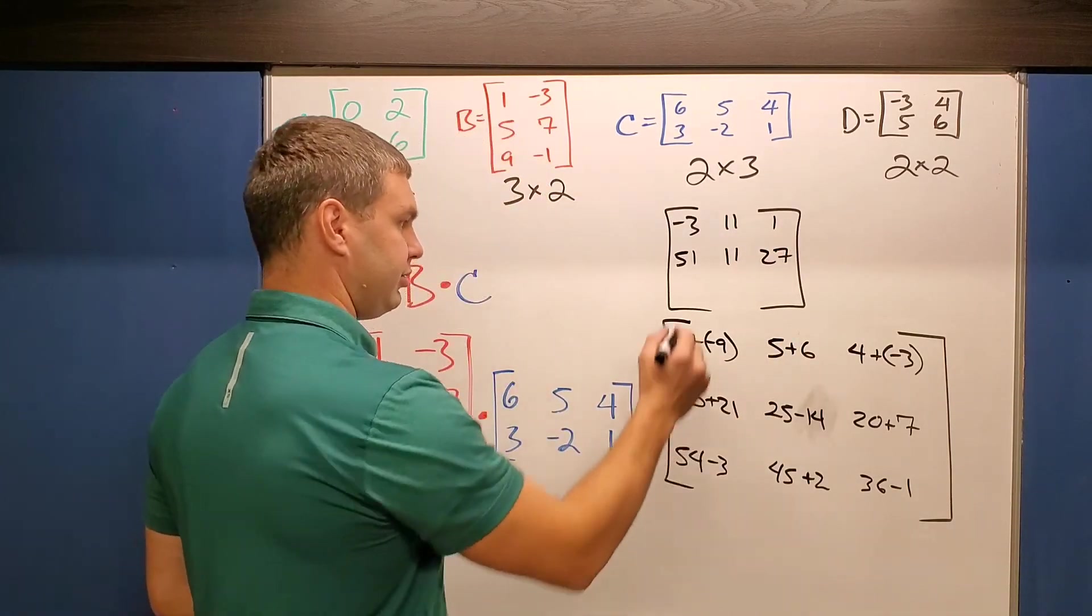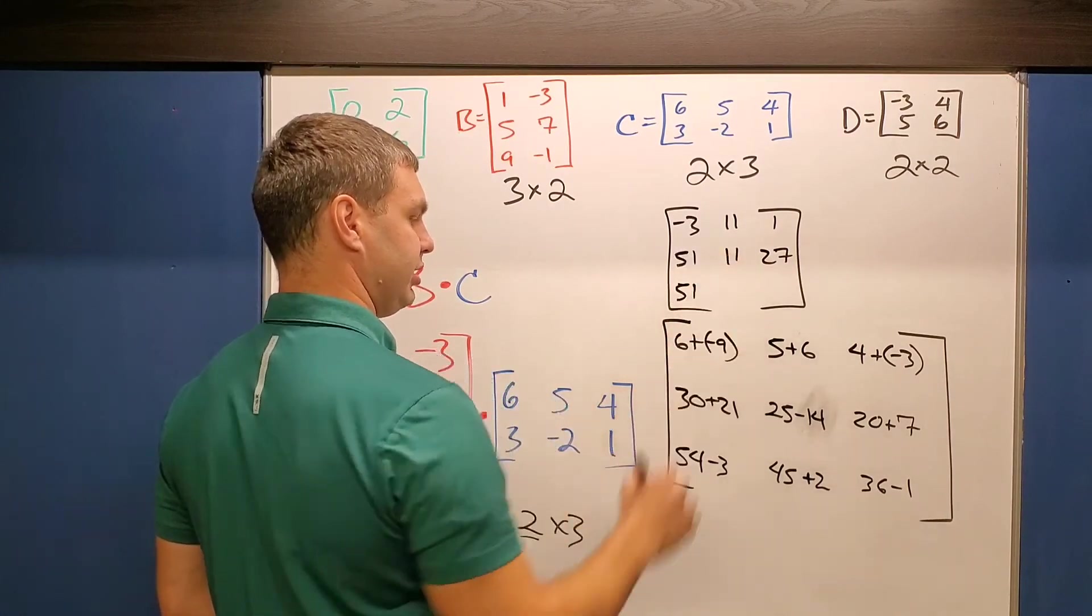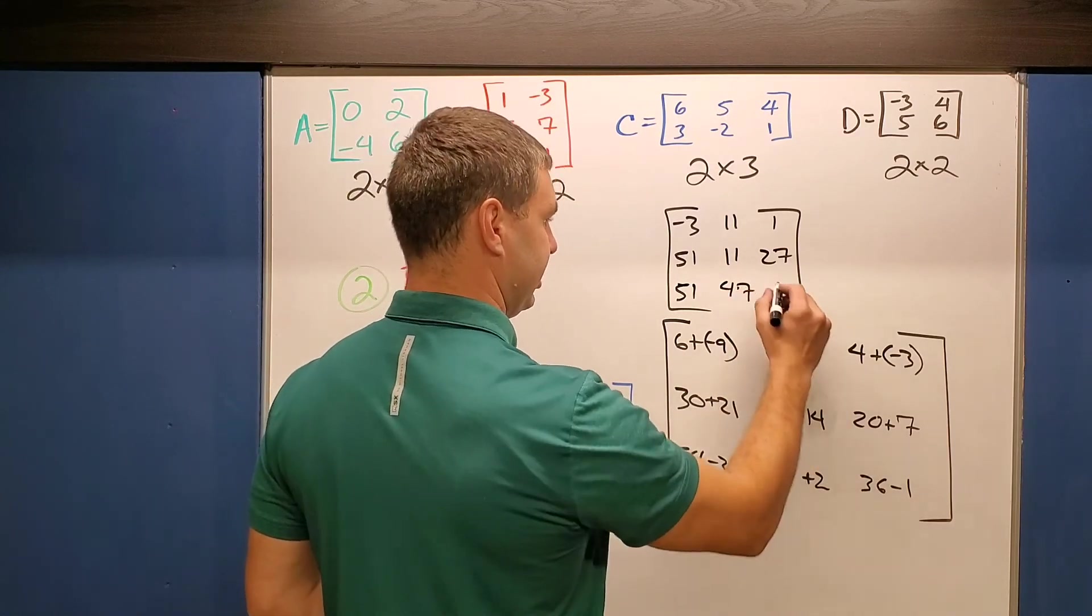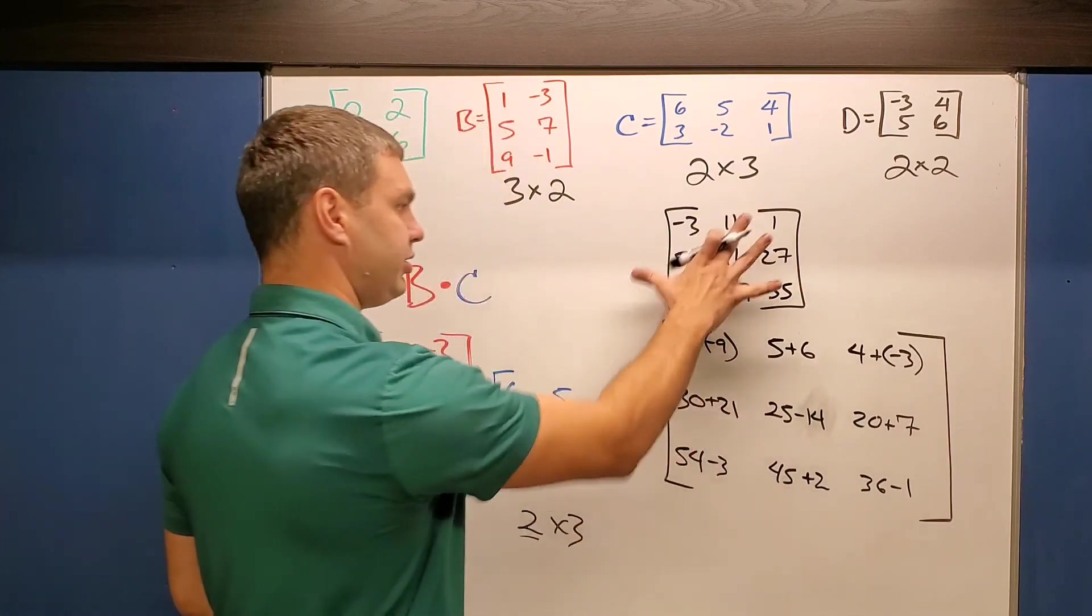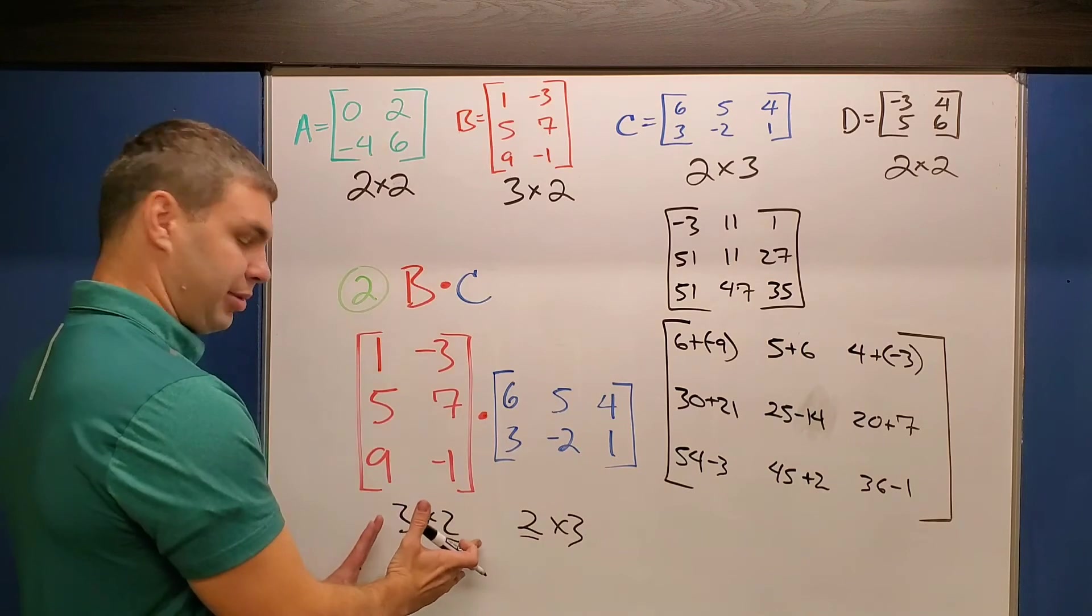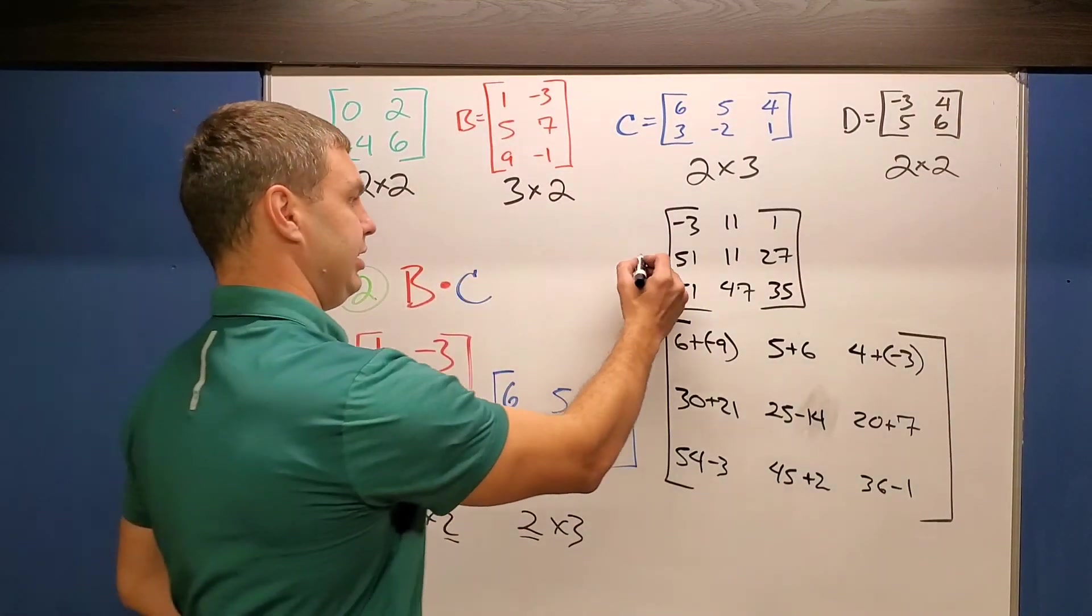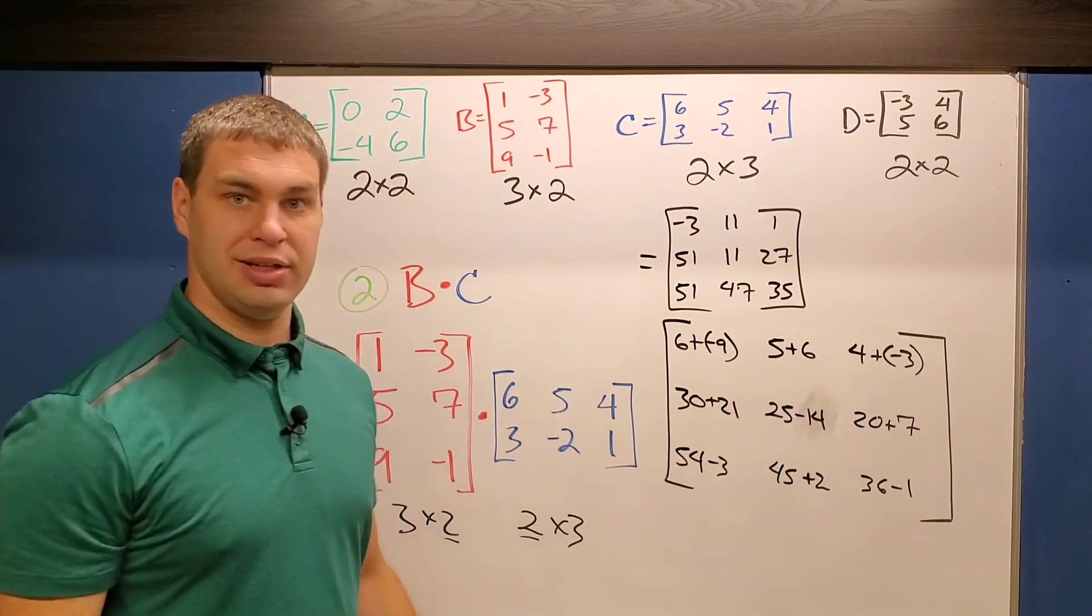54 minus 3 is 51. That's interesting. 45 plus 2 is 47. And lastly, 36 minus 1 is 35. So your answer to this 3×2 matrix times this 2×3 matrix is this 3×3 matrix all simplified.